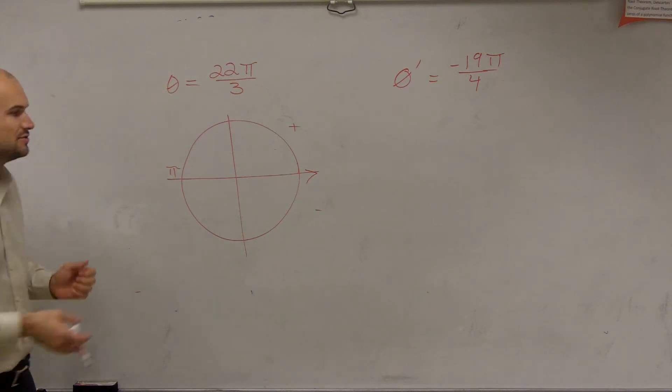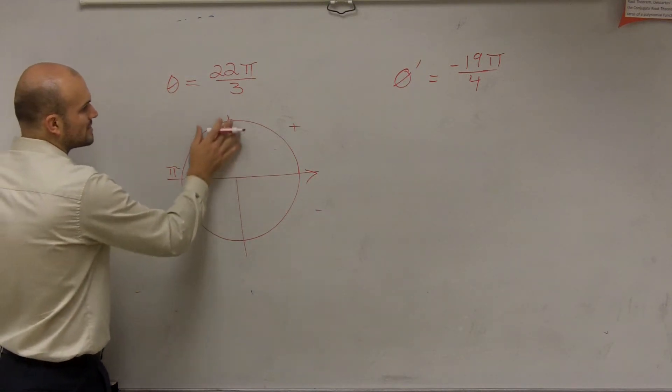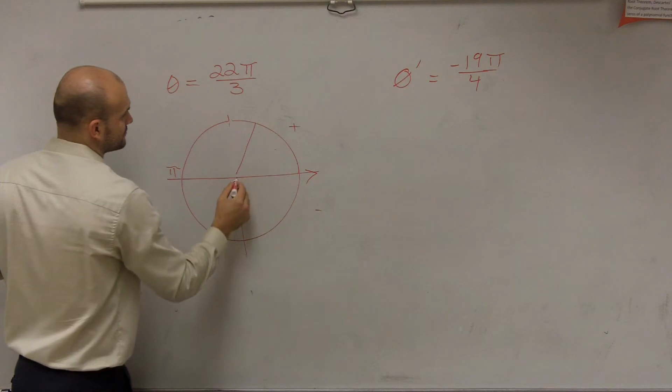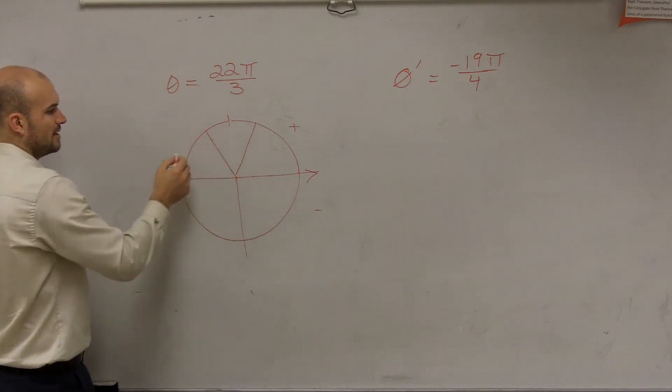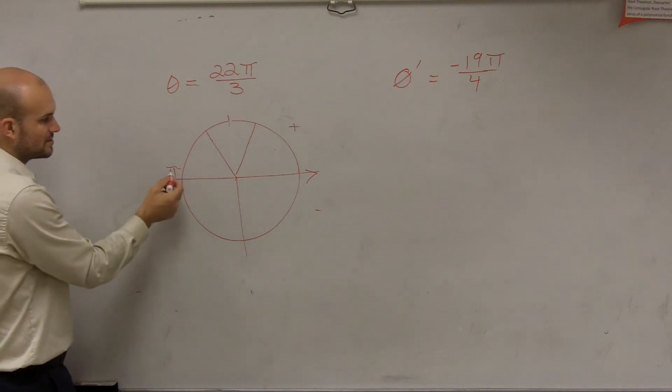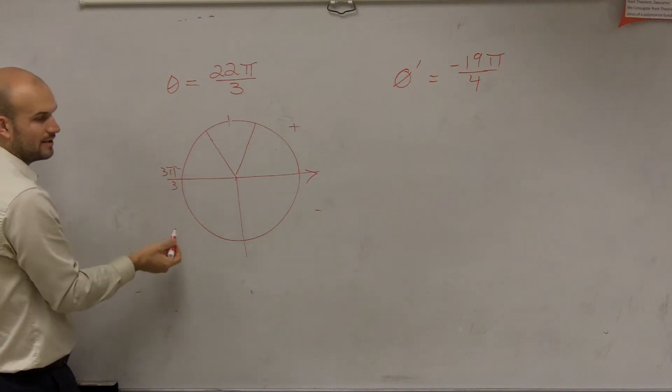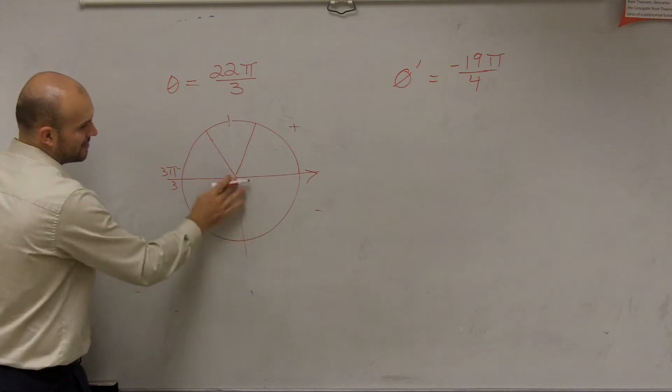So one helpful way to do this was if we broke this up into thirds. We could say this is 1π over 3, 2π over 3, and 3π over 3, which is equivalent to π. And then we could do the same thing on the bottom.